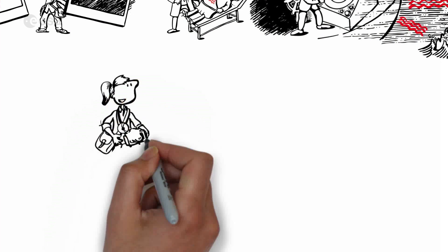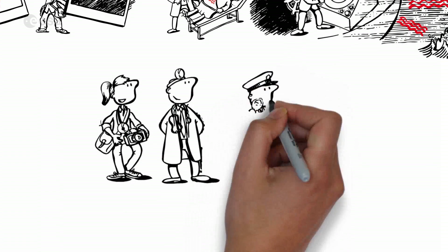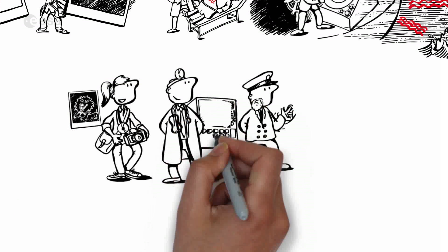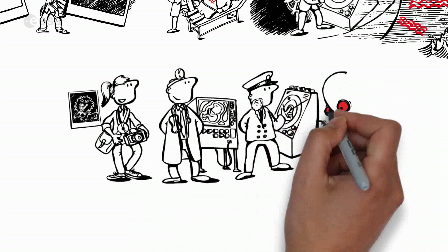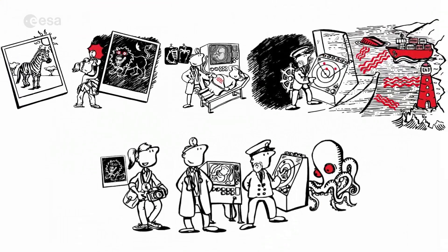Gina's photo flash, John's hospital equipment and Captain Tom's radar all bring their own sources of light, enabling them to look into something we wouldn't be able to see with the naked eye.